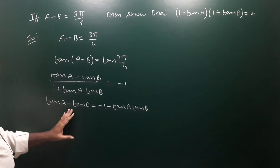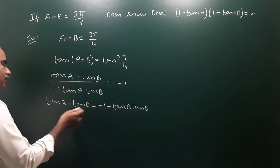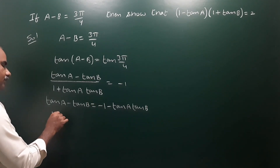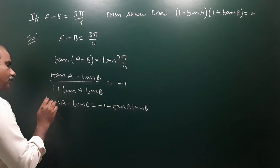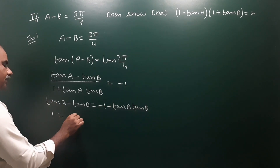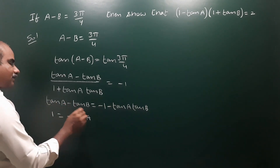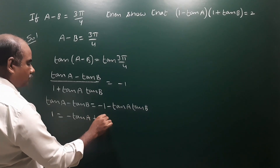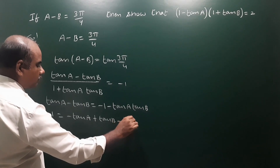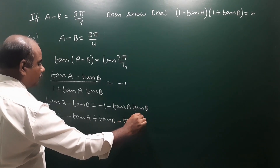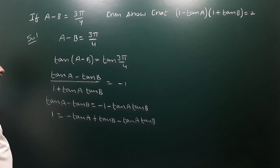Moving minus 1 to the left side: the left side becomes plus 1. Expanding the right side: tan A minus tan A tan B minus tan B. So 1 plus tan A minus tan B minus tan A tan B — let's check these are equal.